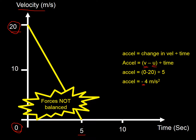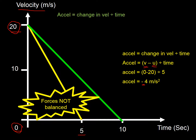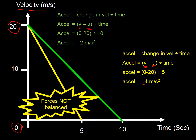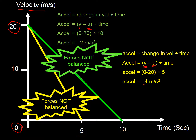Here's another one that's decelerating. Change in velocity divided by time: final velocity is zero, original is 20, so (0 minus 20) divided by 10 gives minus 2 meters per second squared. It's slowing down — changing velocity — so the forces cannot be balanced. The frictional forces must be greater than the force pushing it forward.